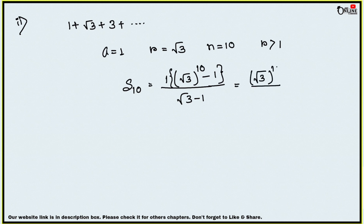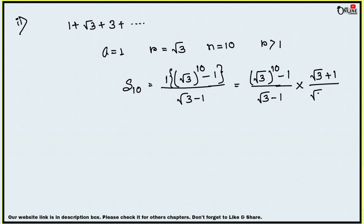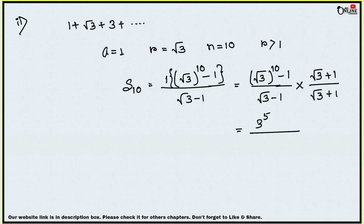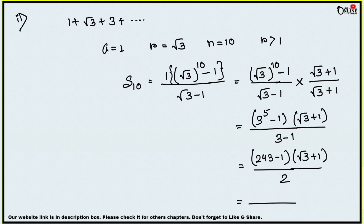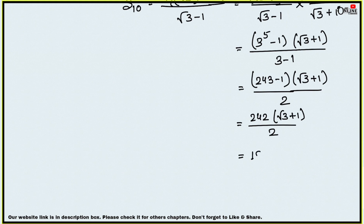We have (√3)¹⁰ − 1 in the numerator and √3 − 1 in the denominator. Now we rationalize by multiplying up and down by (√3 + 1). Since √3 = 3^(1/2), (√3)¹⁰ = 3⁵ = 243. Applying the difference of squares formula (a² − b²) in the denominator gives 3 − 1 = 2. So the expression becomes (243 − 1)(√3 + 1)/2 = 242(√3 + 1)/2 = 121(√3 + 1). The final answer is 121(√3 + 1).